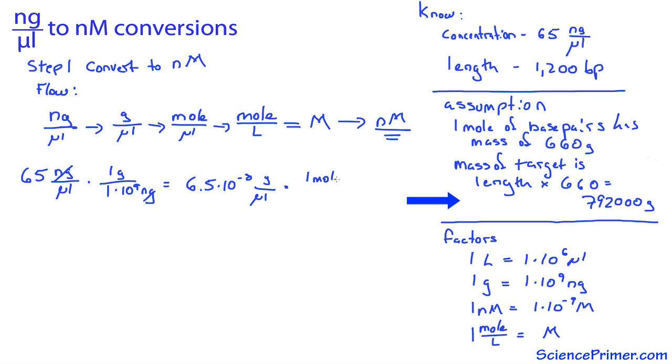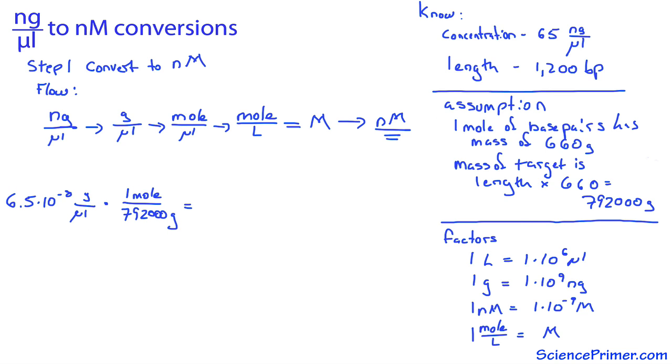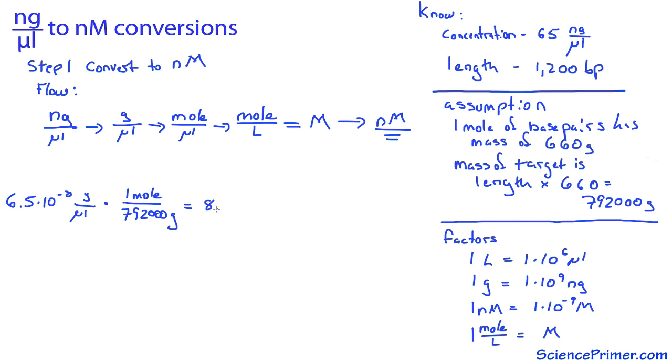Next use the molecular mass to convert from grams to moles. One mole of the template equals 792,000 grams. 6.5 times 10 to the negative 8 divided by 792,000 is 8.207 times 10 to the negative 14. The grams cancel, resulting in the third unit in the flow, moles per microliter.